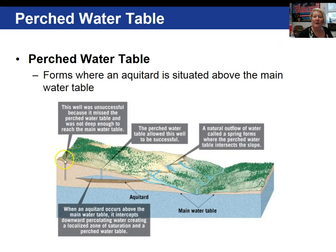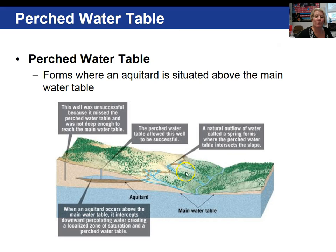This other well, on the other hand, is unsuccessful. It missed the perched water table and did not drill deep enough to get down into the main aquifer. Where the perched water table intersects the surface of the earth, you get springs that flow down the slope.